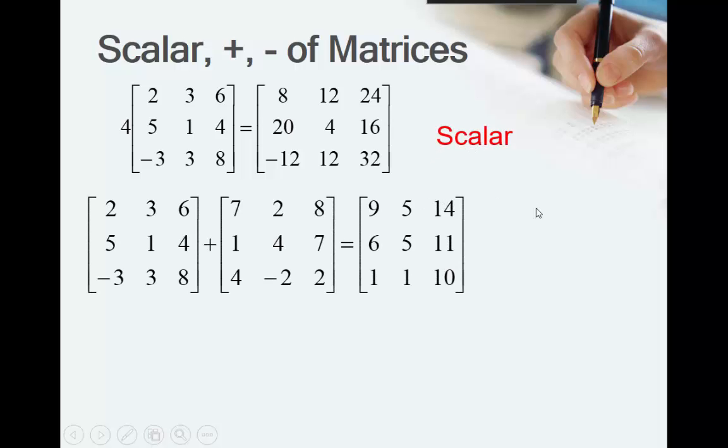When I'm adding two matrices together, I'm going to simply go the first value there plus the first value there. So, 2 plus 7 is 9, 3 plus 2 is 5, 6 plus 8 is 14. So, you have to hit the corresponding side there. That's addition of matrices.